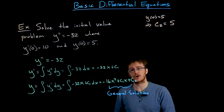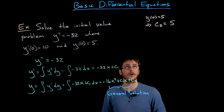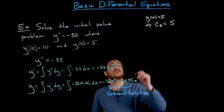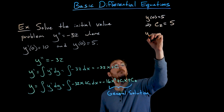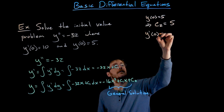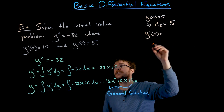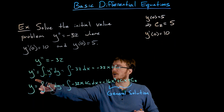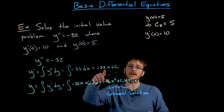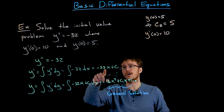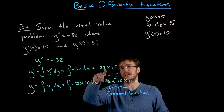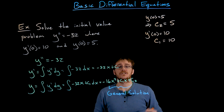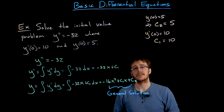We also need to find c1. To do that, we look at the first derivative of our function. We know that the first derivative evaluated at 0 should give us positive 10. If we go to the equation for our first derivative and plug in x equals 0, we're left with c1. So c1 must equal 10.